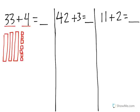Now I can see I still have 10, 20, 30, 31, 32, 33, 34, 35, 36, and 37. So 33 plus 4 is equal to 37.